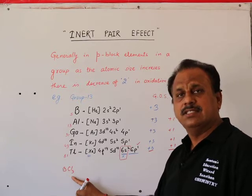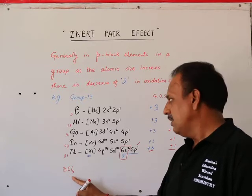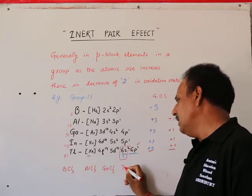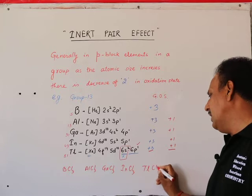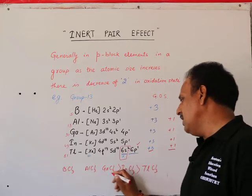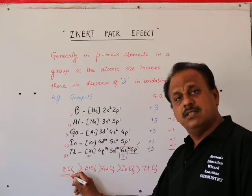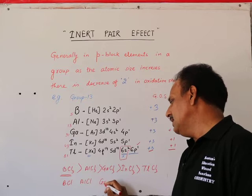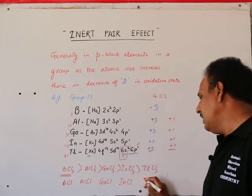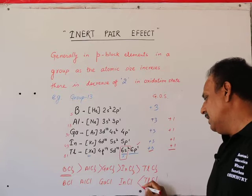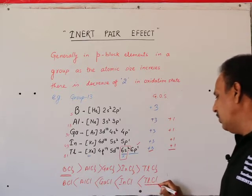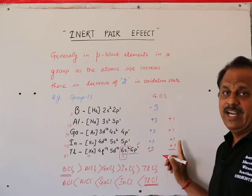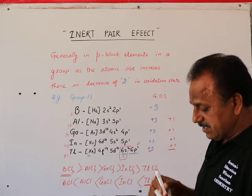Boron trichloride in +3 oxidation state is most stable. But for aluminum, gallium, indium, and thallium chlorides, as we go down, TlCl in +1 state is most stable due to inert pair effect. This happens in other groups too.